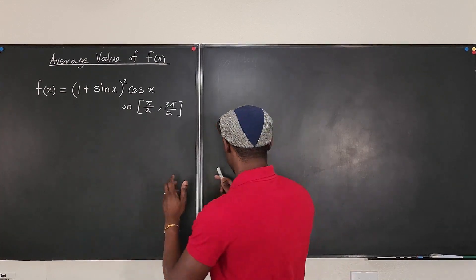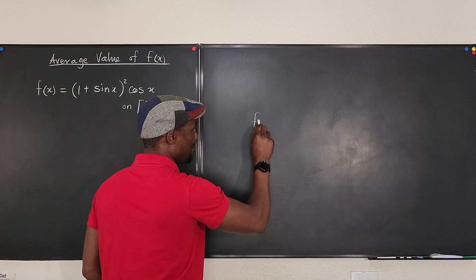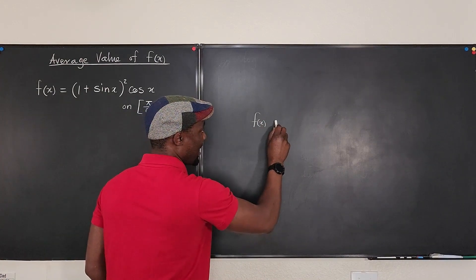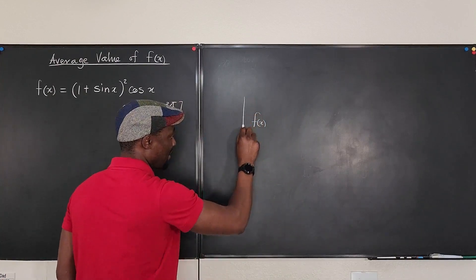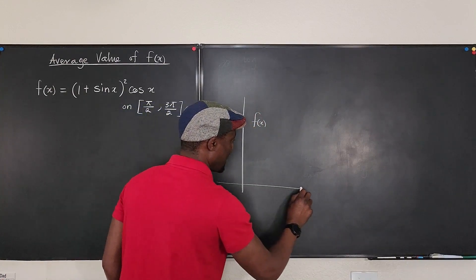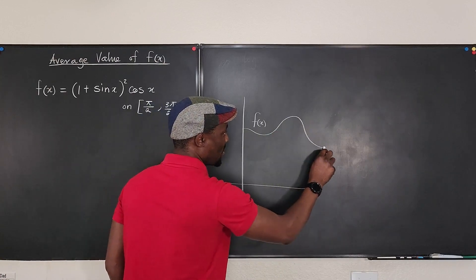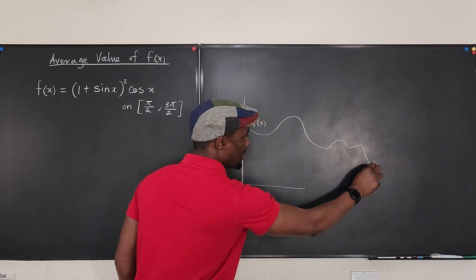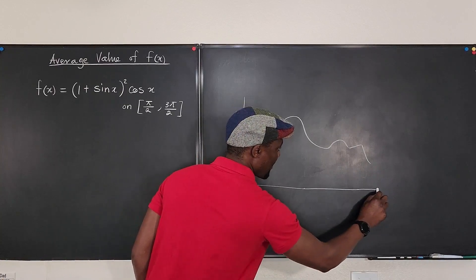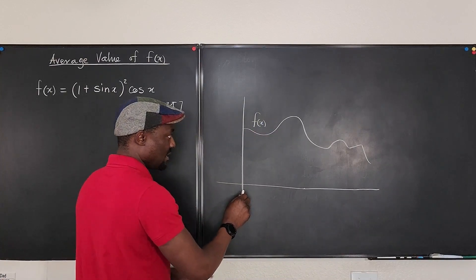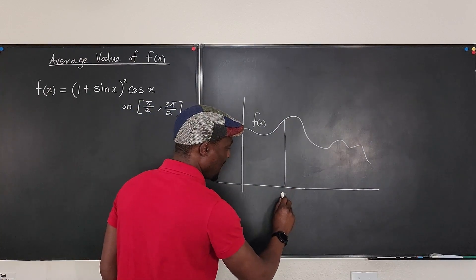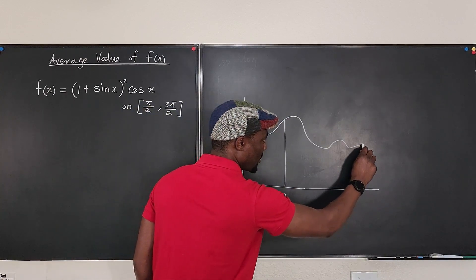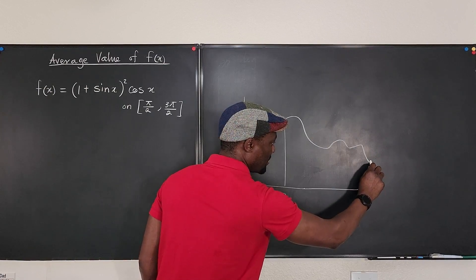So, let's say we have a function f of x, and when you plot it on a graph, f of x goes like this and stops here. Let's say we go from here to here, and you want to take the average height from this point, let's call this point A, to this point, let's call this point B.